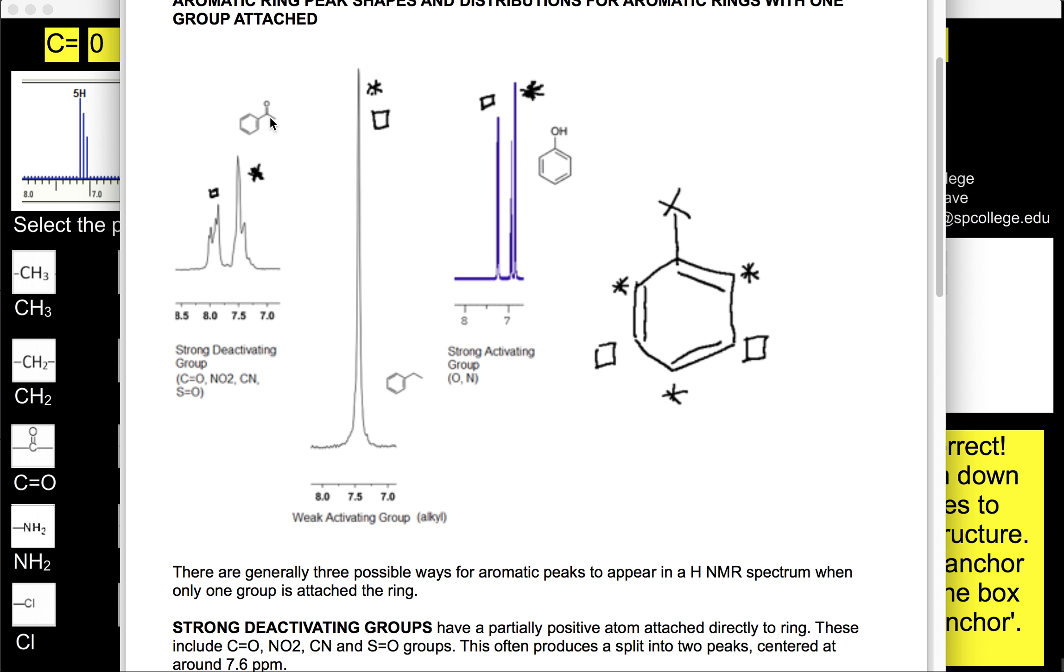you can see that when there's a C double bond O attached to the aromatic ring, it usually splits into two peaks, centred around, say, 7.5 ppm. And oxygen directly connected to the aromatic ring usually splits it into two groups and is around 7 ppm.